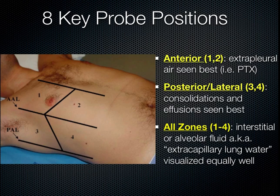Anteriorly is the best place we look for pneumothorax because when a patient is supine, this is where the extrapleural air will be seen. Posterolaterally, we can best see consolidations and effusions because of the gravity dependence of these. In all zones, we should be able to see extravascular lung water equally well. For instance, if a patient has pulmonary edema, this should be diffuse.